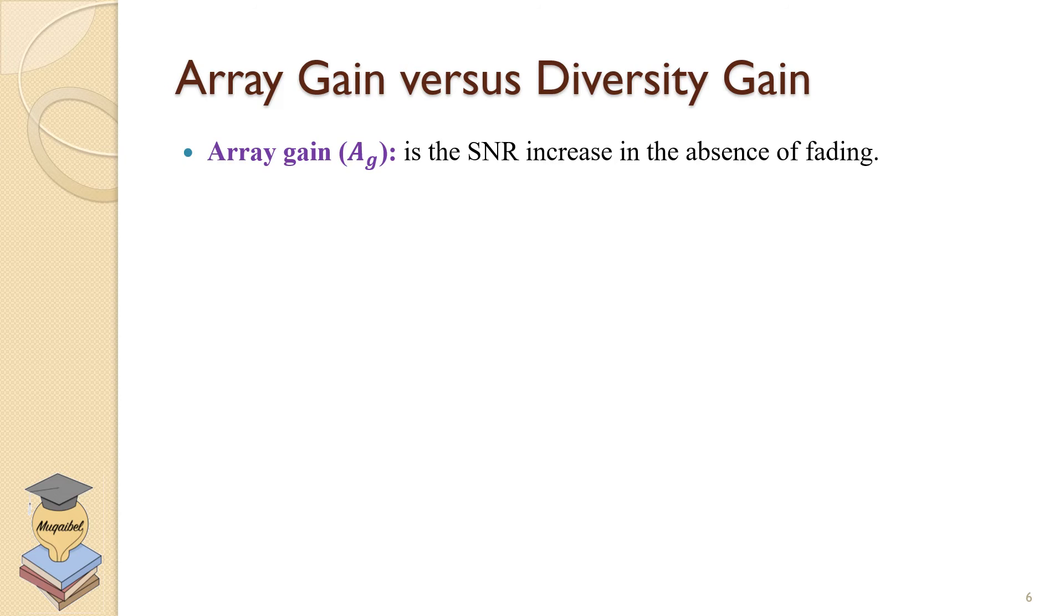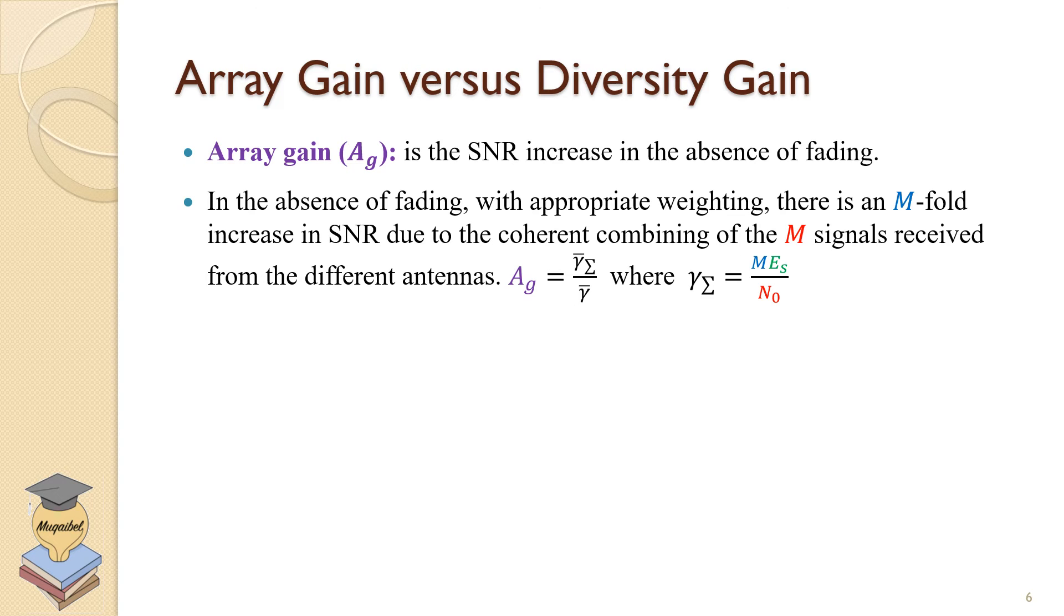In the absence of fading with appropriate weights, there is an M-fold increase in the signal-to-noise ratio due to the coherent combining of the M signals received from the different antennas. That's the array gain.